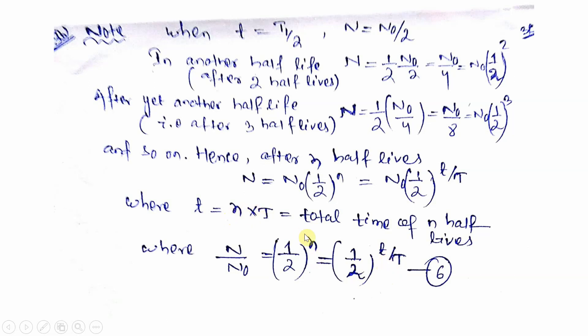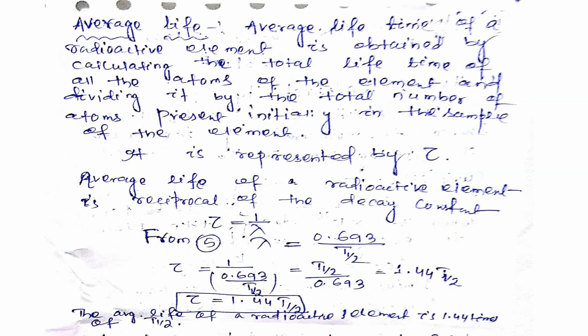Now we come to another factor: average life. The average lifetime of a radioactive element is obtained by calculating the total lifetime of all the atoms of the element and dividing it by the total number of atoms present initially. In short, the average lifetime is the total time period within which the substance reduces completely — that means 100% disintegration.